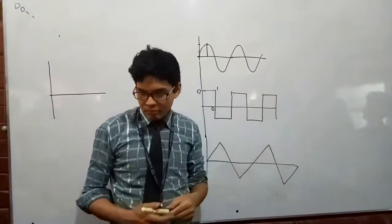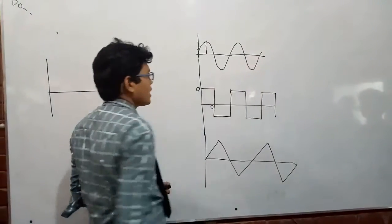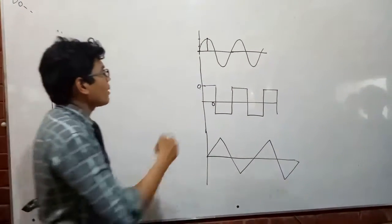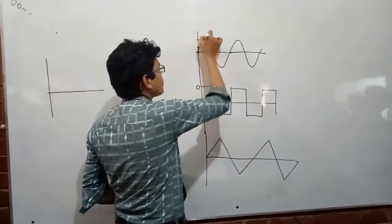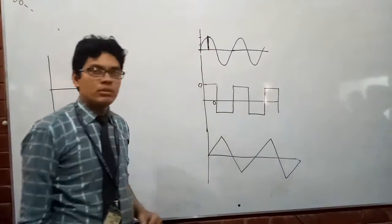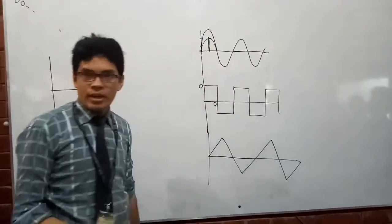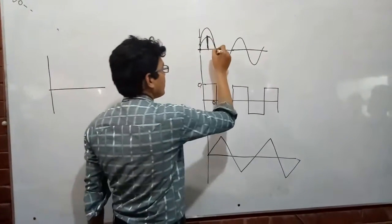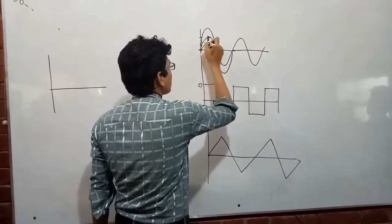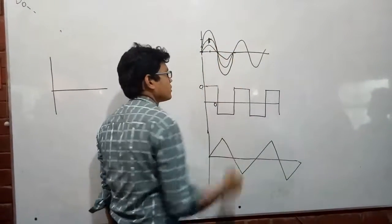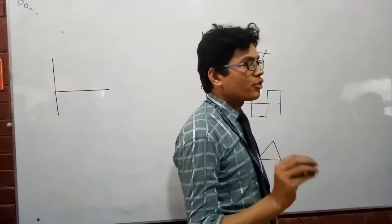Next is amplitude. Amplitude is the maximum value — the height of the wave. Once you increase the amplitude, that height increases. Once we increase the amplitude the wave will be taller; when it comes down it comes lower. That is amplitude.